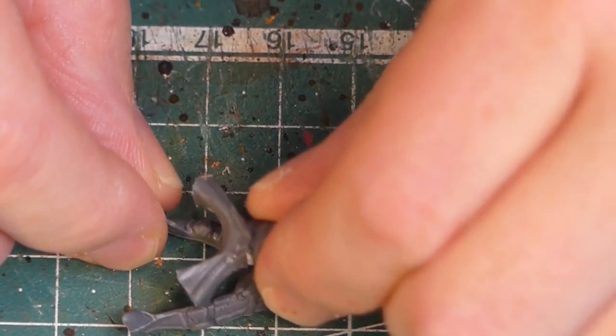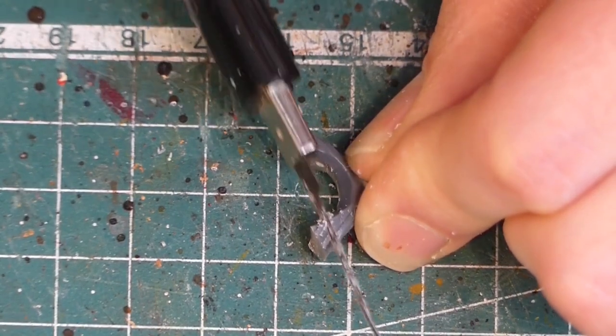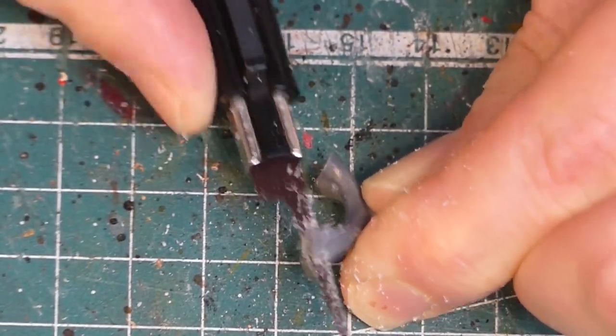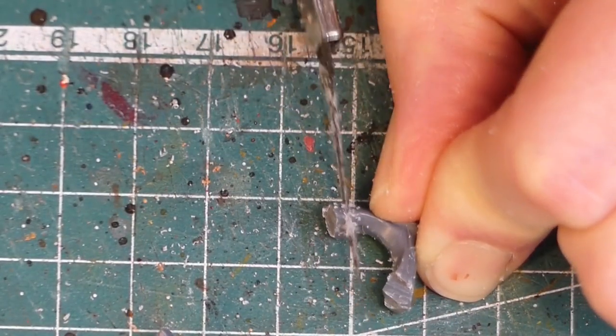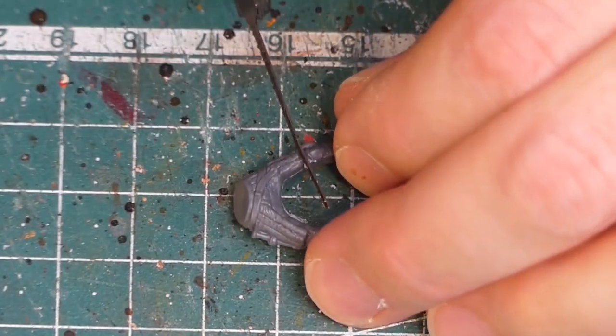To measure the right length for the new legs I hold them above the Fireforge miniatures. Then I cut off the legs in plate armor.